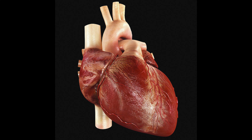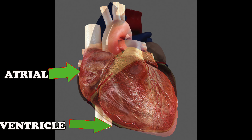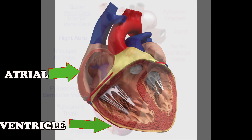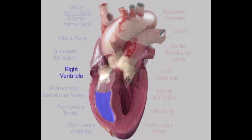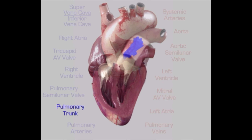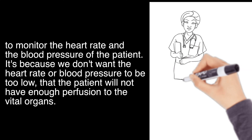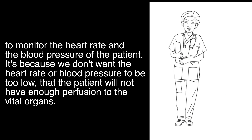The myocardial cells are located in the muscular layer of the atrial and ventricular walls. Their primary function is contraction and relaxation. The nursing responsibility is to monitor the heart rate and blood pressure of the patient, because we don't want the heart rate or blood pressure to be too low, which would result in insufficient perfusion to the vital organs.